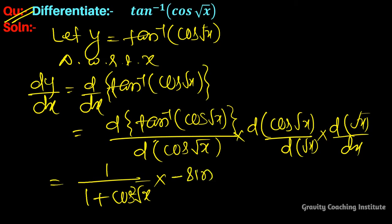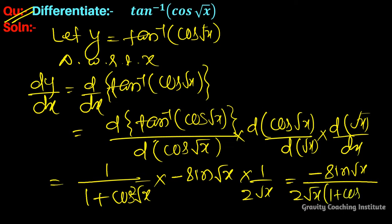So minus sin root x, the derivative of root x is 1 upon 2 root x, equals minus sin root x upon 2 root x times 1 plus cos square root x. Answer.